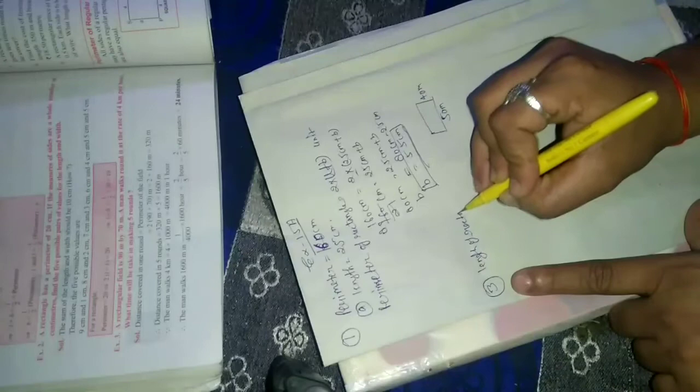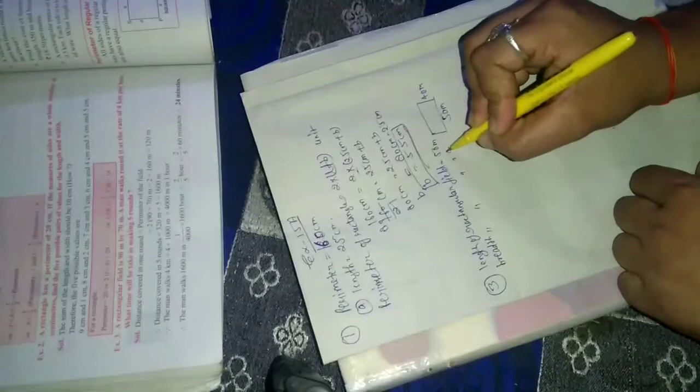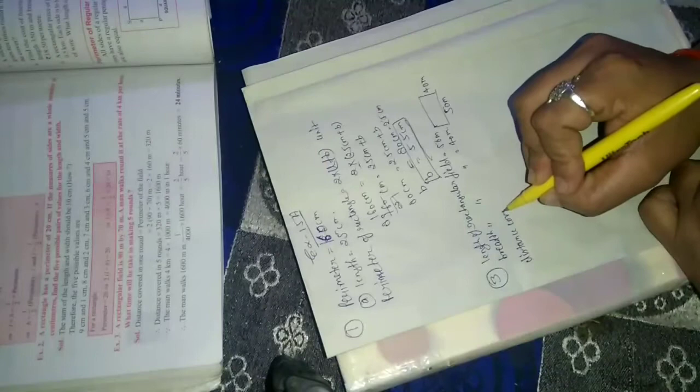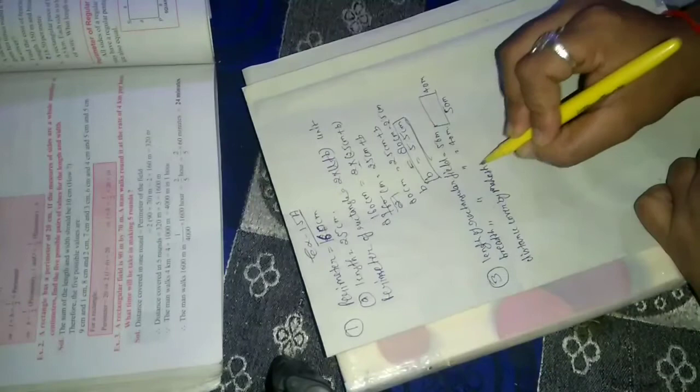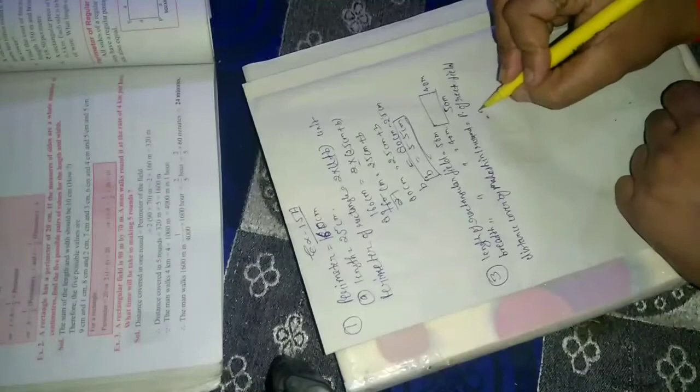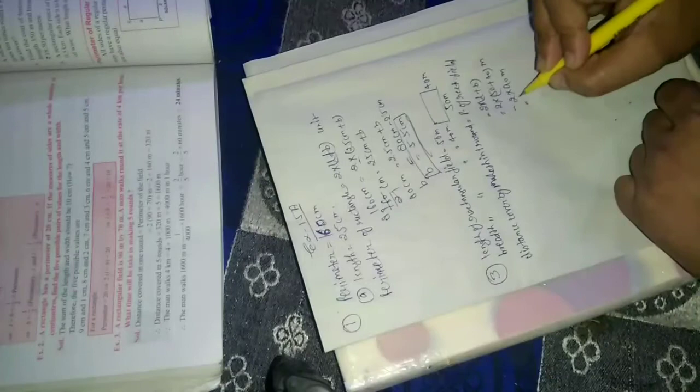Length of rectangular field is equal to 50 meter, breadth of rectangular field is equal to 40 meter. Distance covered by Mahesh in one round is equal to perimeter of rectangular field. Perimeter equals 2 into length plus breadth, 2 into 50 meter plus 40 meter, 2 into 90 meter equals 180 meter.